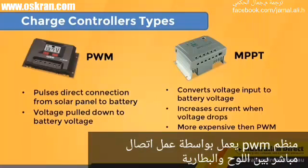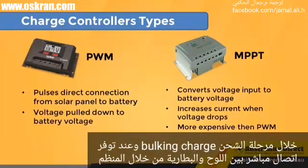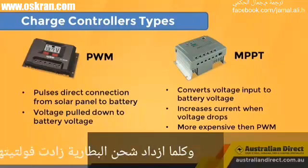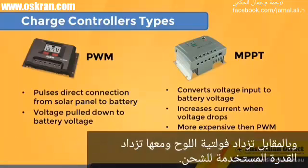PWM charge controllers operate by making a direct connection from the solar array to the battery bank. During bulk charging, when there is a continuous connection from the array to the battery bank, the array output voltage is pulled down to match the battery voltage. As the battery charges, the voltage of the battery rises so that the voltage output of the solar panel rises as well, using more of the solar power as it charges.